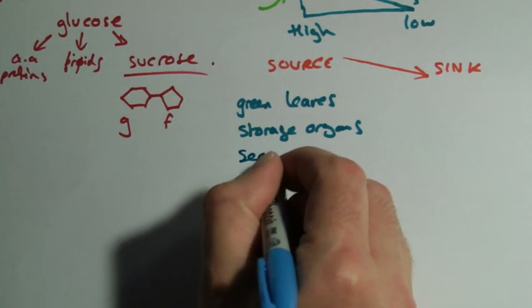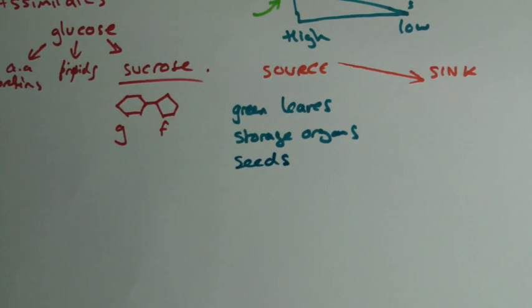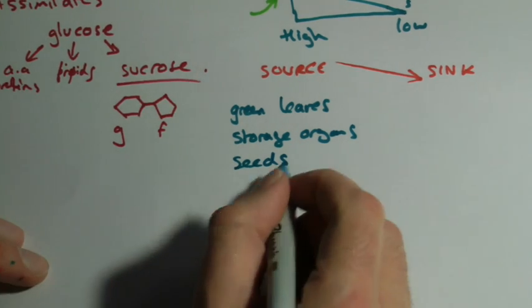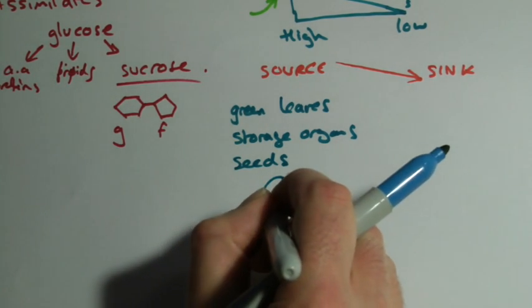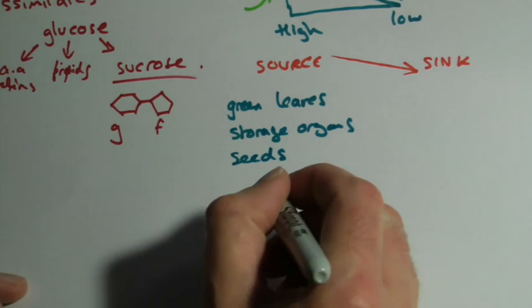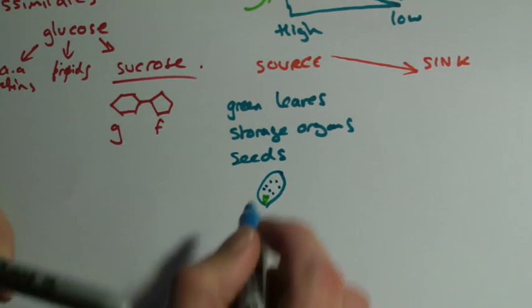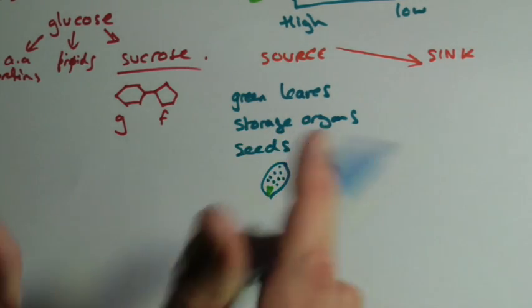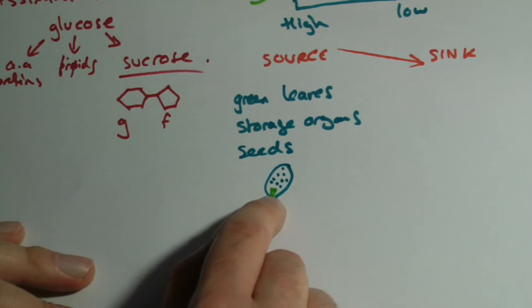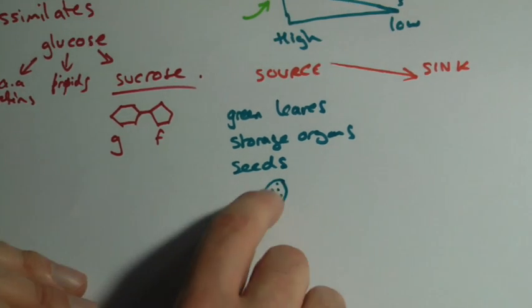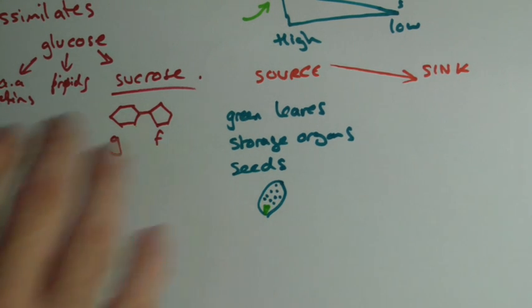The seeds. Seeds are also a source, because if you look inside of a seed, basically what you have is a little baby plant, a little plant embryo at one end, and then the rest of it is just a big store of food. That's because when this seed is underground, it can't photosynthesize. It's not in light underground, so it has to use this store of food. So it can release the sugars. So that's the sources.